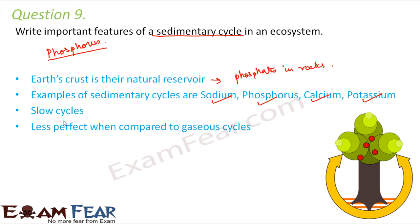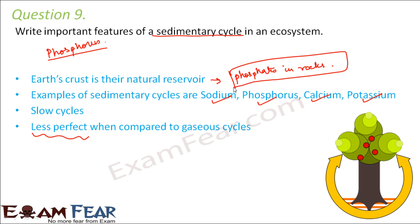Sedimentary cycles are less perfect when compared to gaseous cycles. This is because the nutrient elements may get locked in their reservoirs. For example, the reservoir for phosphorus is rock. If some rocks do not weather or dissolve, the phosphorus will not come out, and the cycle cannot proceed. In gaseous cycles, this happens much faster and there is less probability of the substance getting locked, making them more perfect in comparison.